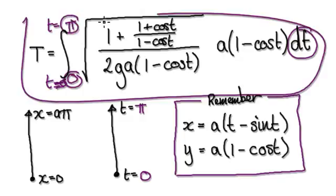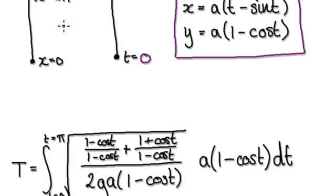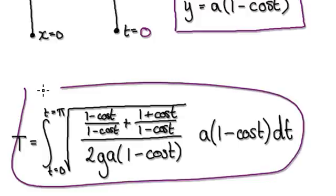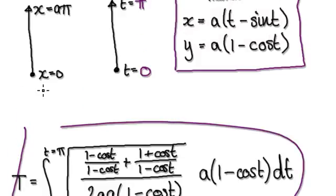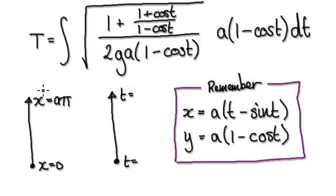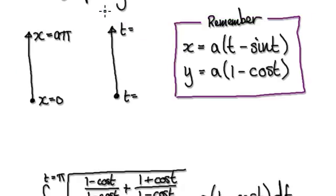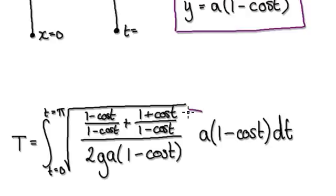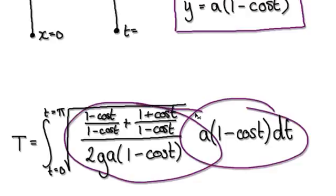So this whole thing will then become this, integrating from t equals zero to t equals pi. Now we need to tidy this up. Remember, you can imagine the expression as being one — exactly the same divided by exactly the same — so this thing here is one.